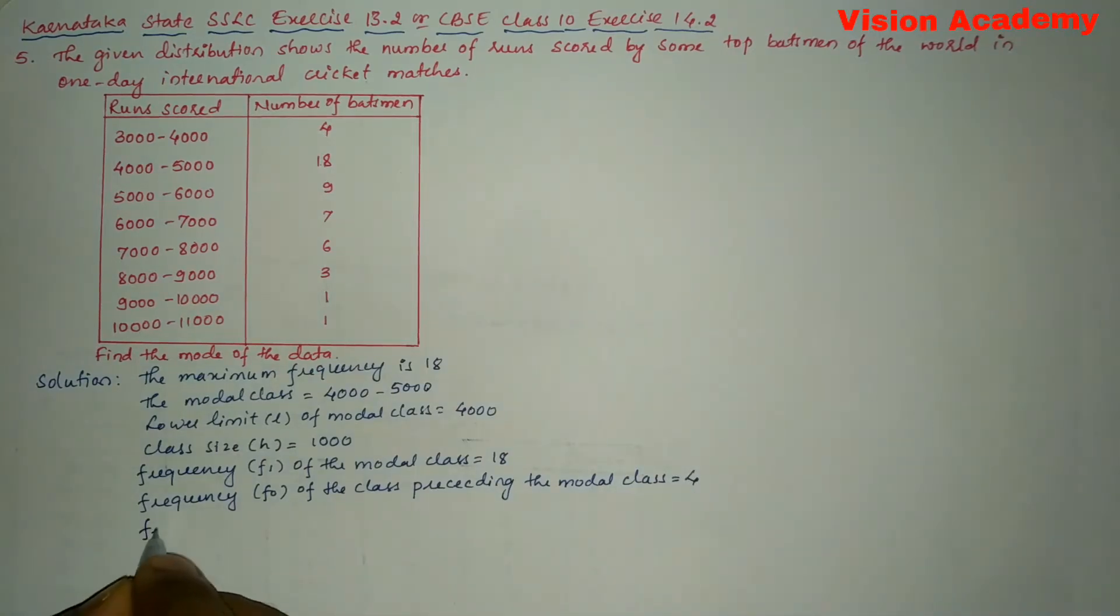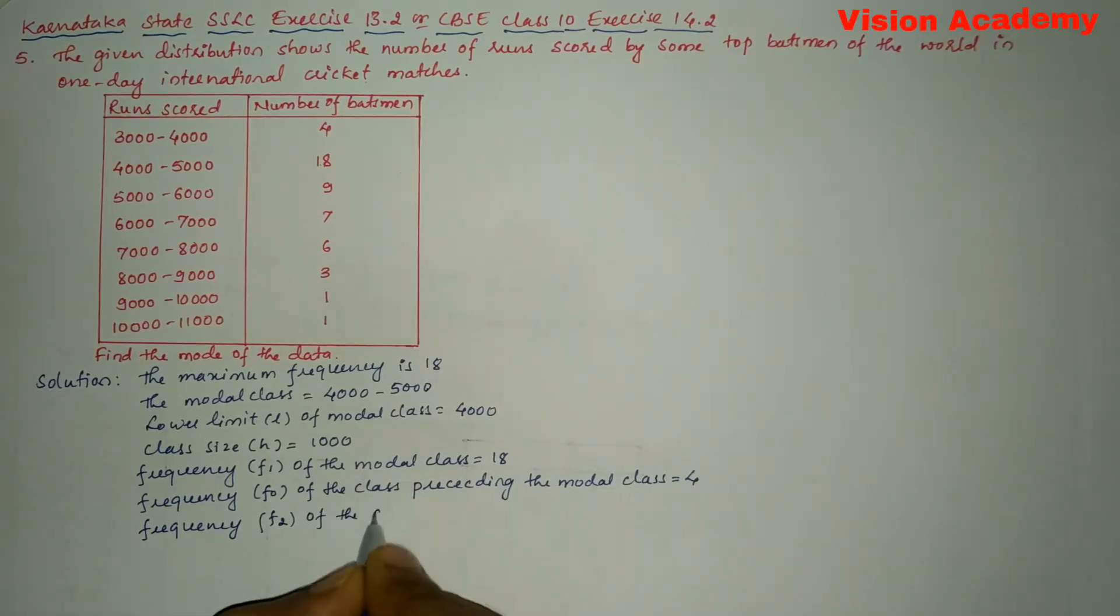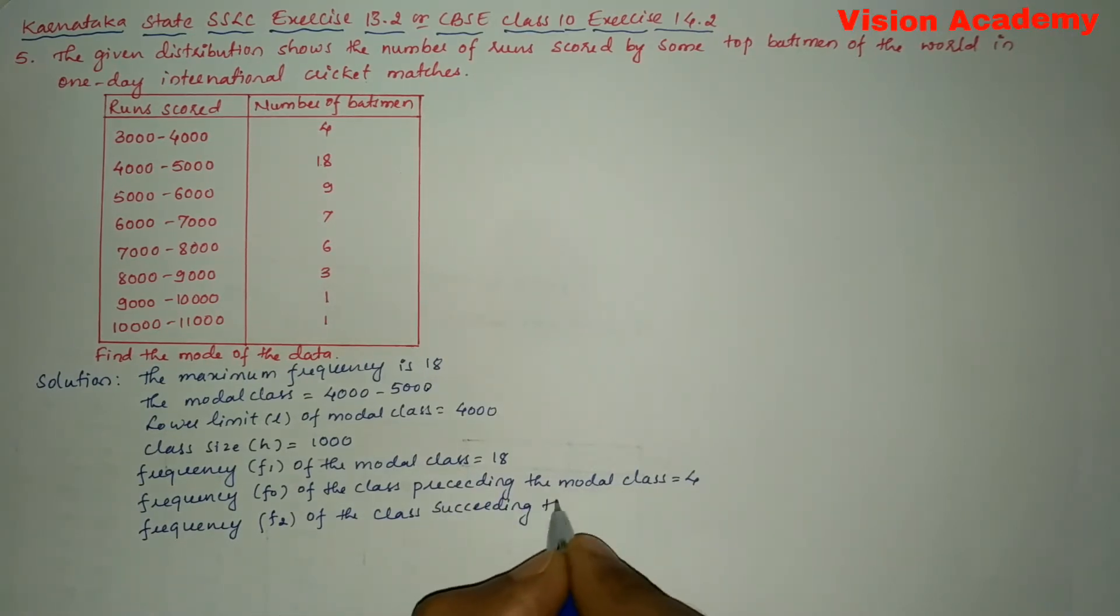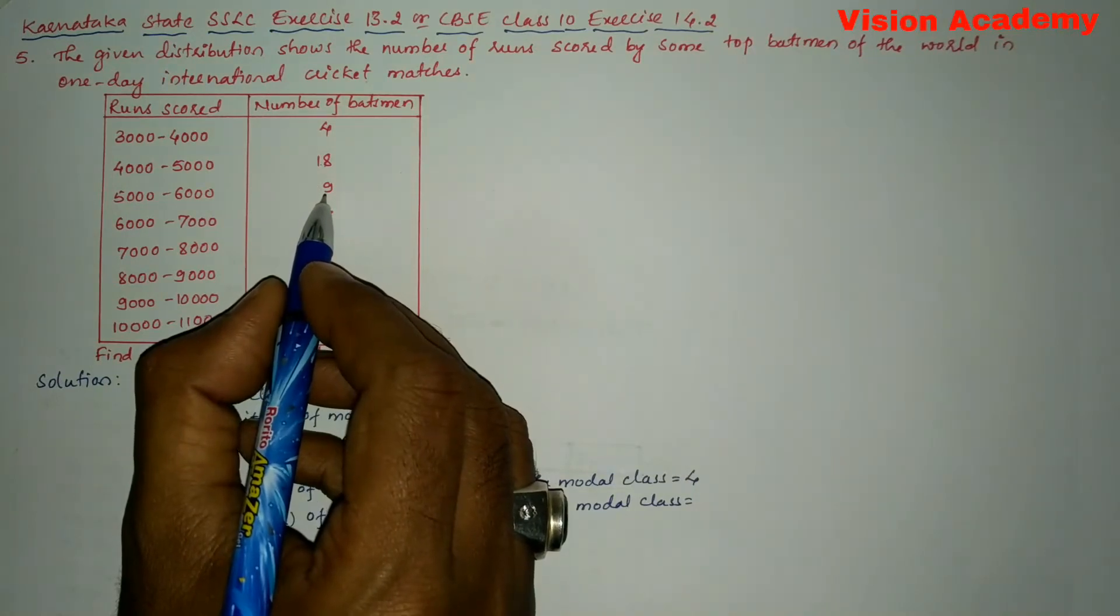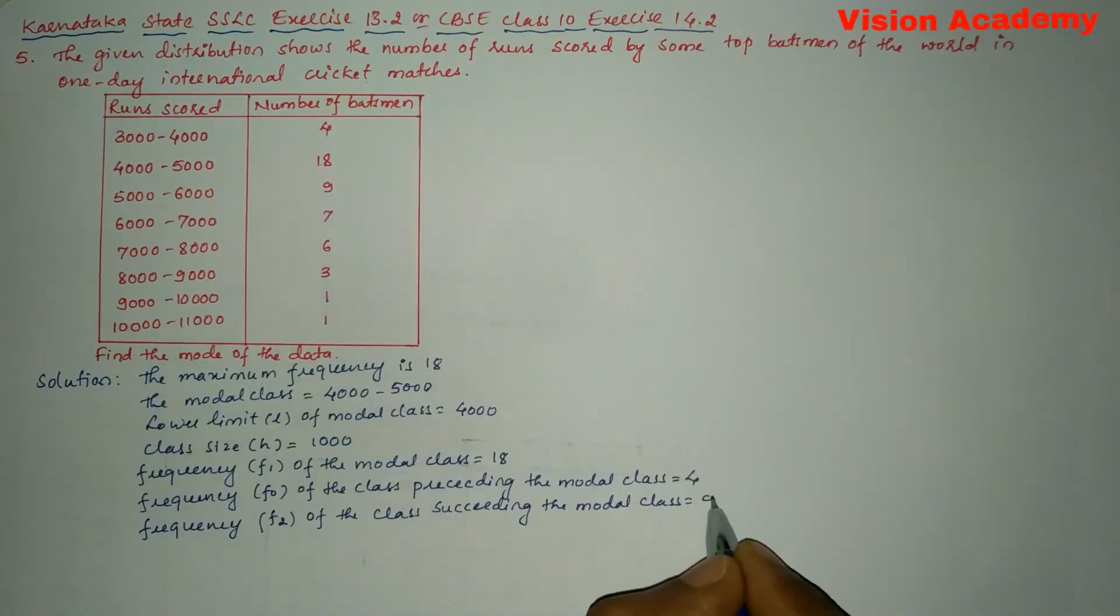Next we will write frequency f2 of the class succeeding the modal class. So after 18 the next succeeding frequency is 9.